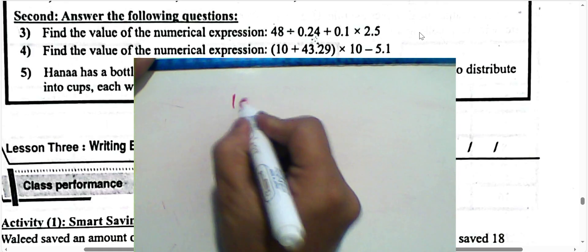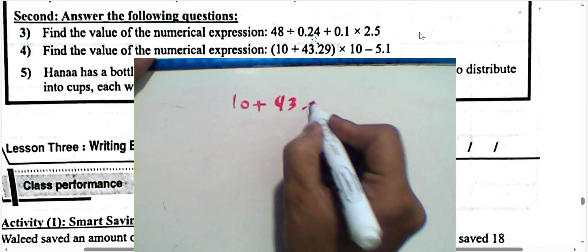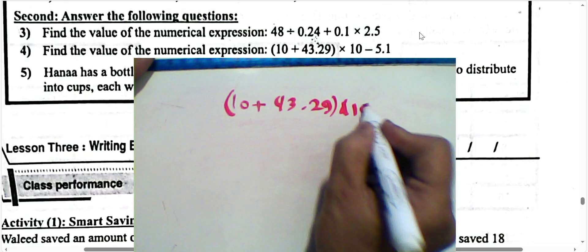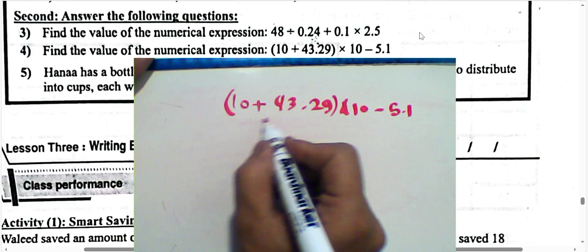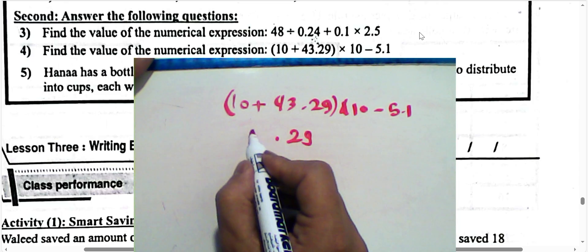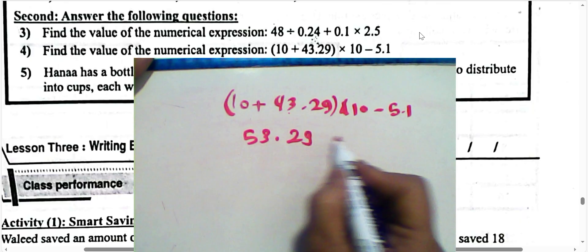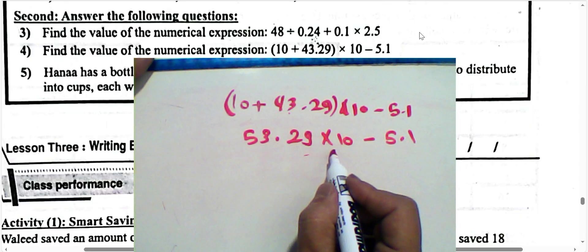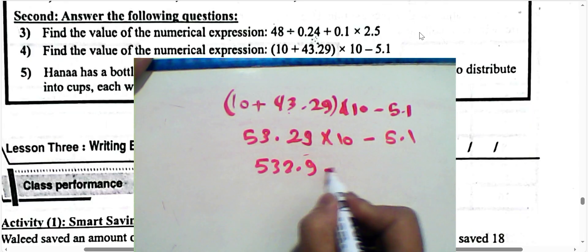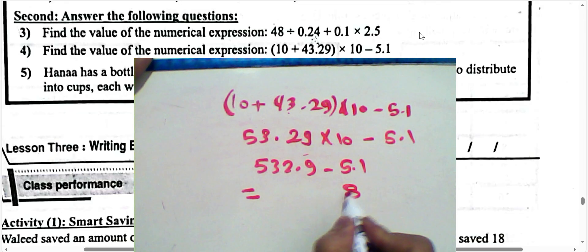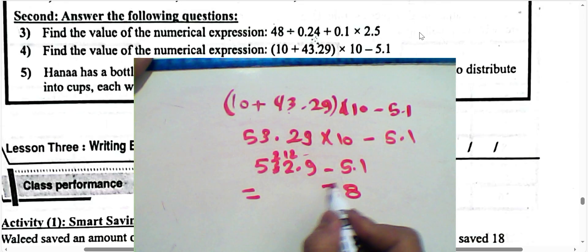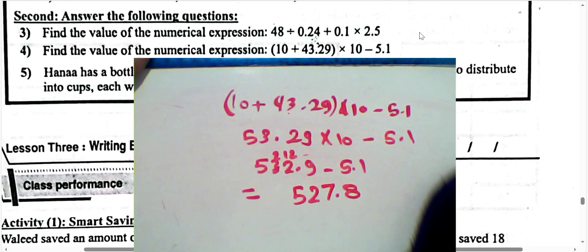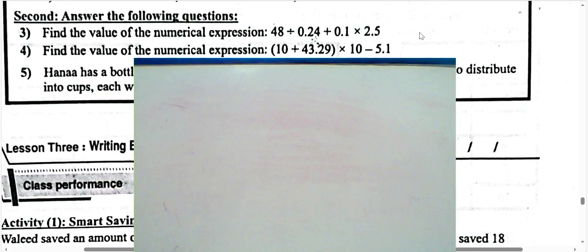Next question number 4: find the value of the expression 10 plus 4, 3 and 29 hundredths multiplied by 10, subtract 5.1. Collect together: 29 hundredths and 4 plus 3 plus 10 equals 43, plus 0 equals 3; result is 53. Multiply by 10 — move the decimal point right by one place: 532.9. Subtract 5.1: 9 minus 1 equals 8; 2 minus 5, borrow so 12 minus 5 equals 7; write 2 and 5. The result is 527 and 8 tenths.